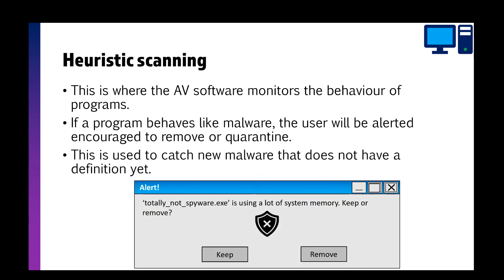Heuristic scans run in the background and monitor what various programs are doing. If a program behaves like malware — for example using loads of disk space because it's constantly replicating itself — it gets flagged as acting suspicious and removed. This is also how the software captures new malware that doesn't have a definition yet. For example, cryptocurrency mining software can get picked up by antivirus because it uses a lot of CPU and disk space, and may get mistaken for a virus.